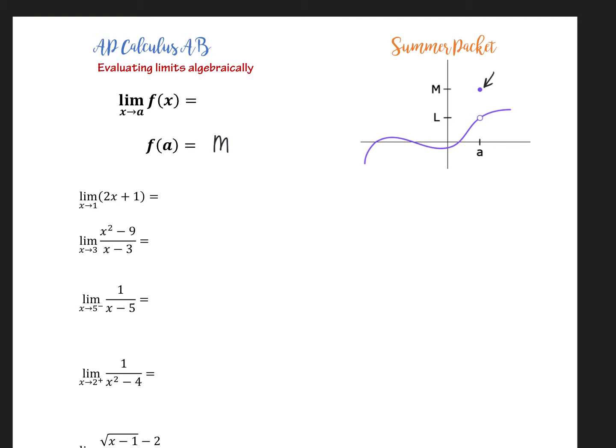But notice a limit is asking, as we get really close to a, as we approach a from the left side and from the right side, what y value are we approaching? Notice in these arrows here, as we're approaching a from the left side, the y value is not approaching m, it's approaching l. And as I approach this function, as I get closer to a on the right side, the y values are approaching l. So here, the limit as x approaches a of f of x is equal to l.